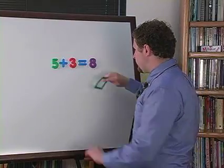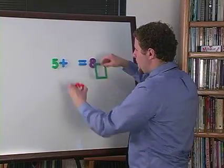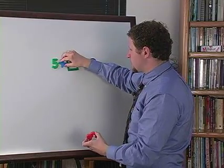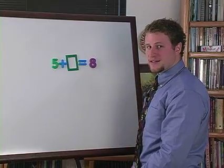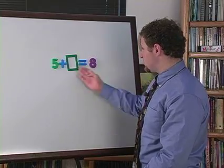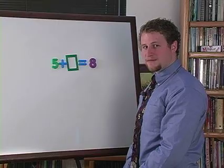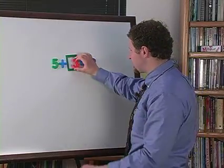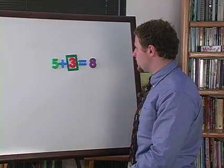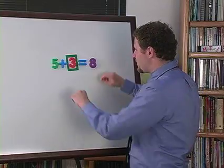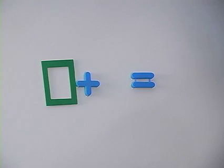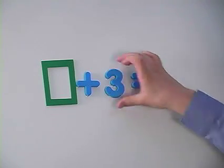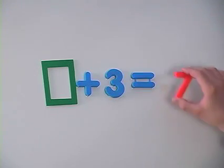But what if you didn't know about the 3 and there was a box here? It would be 5 plus box is equal to 8. Well since you're just missing a different piece of information, of course it's still going to be 3. But what if I didn't know that before I was doing the problem? What if I was doing box plus 3 is equal to 7.